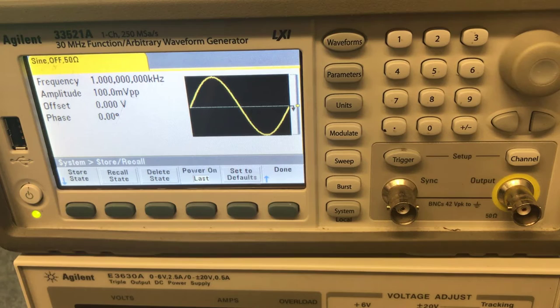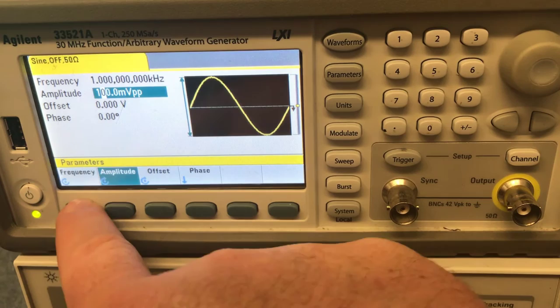The offset is 0.00, that's good. The phase is 0. But the amplitude is too high. The amplitude is currently at 100 millivolts peak to peak. The PP stands for peak to peak. But we're looking for 10 millivolts peak to peak. So let's push the button that says parameters.